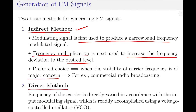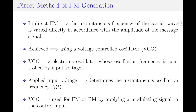On the other hand, in direct method of FM signal generation, the frequency of the carrier is directly varied in accordance with the modulating signal, and this can be accomplished using a voltage controlled oscillator. Let us now discuss this direct method of FM signal generation in much detail.